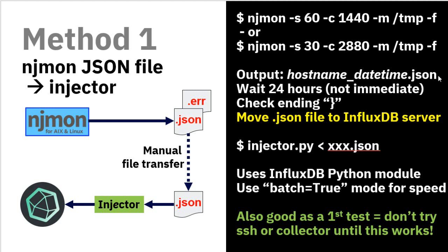The output file — we already covered that. We're going to wait 24 hours, not immediately — though you could go for a couple of hundred snapshots if you wanted to wait less time. If you look at the end of the output .json file, it will have a line with just a single closing curly brace. That's a good way of detecting that NJMon has finished collecting the data. We then move that file to the InfluxDB server — you can do that however you like.